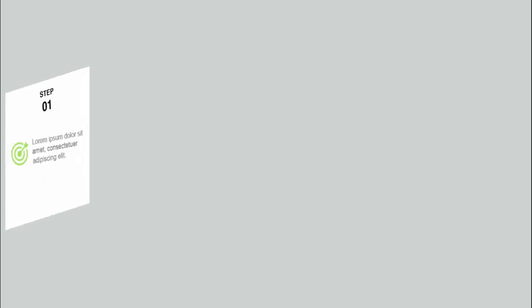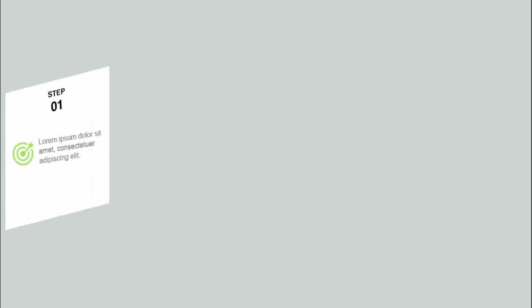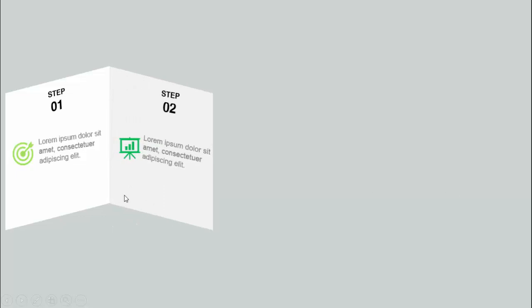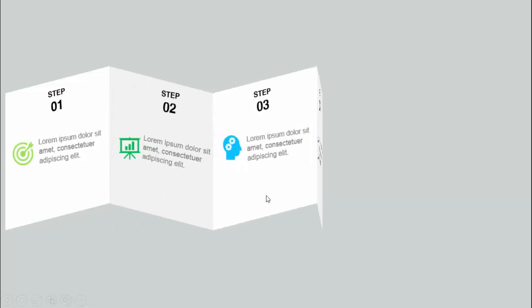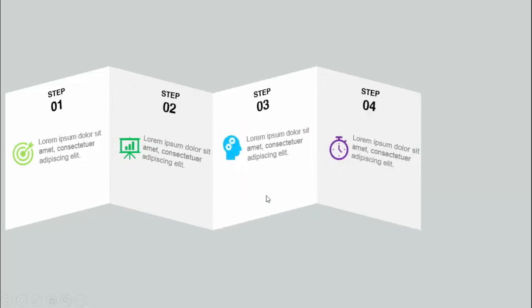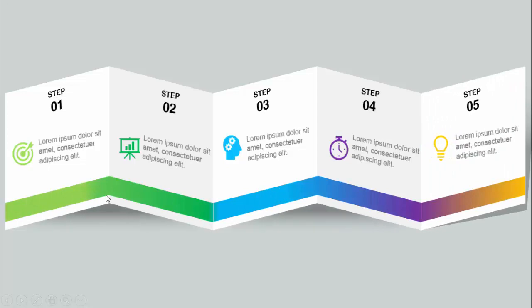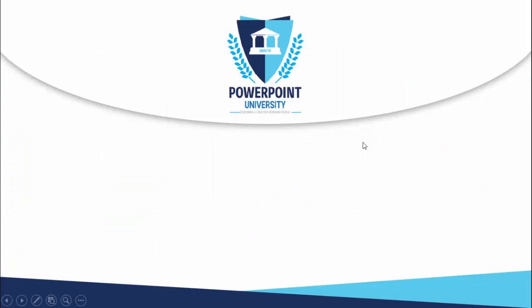In today's tutorial I'm going to show you how to create a five-options infographic sliding PowerPoint. When I click you can see the first option comes — Step 1 — you can add the icon and the detailed text. Clicking again shows the second, third, fourth, and fifth options. I've also added a color bar, and depending on your requirement you can increase or decrease these options.